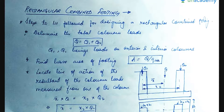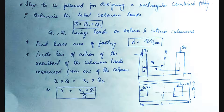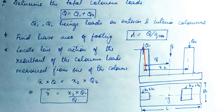Now let's see the step-by-step procedure for designing a rectangular combined footing. The aim is to select the length and width of the footing such that the centroid of the footing and the resultant of the column loads coincide. Here we have a rectangular footing in plan with two columns of different sizes. This is the elevation view showing the two columns and the footing.